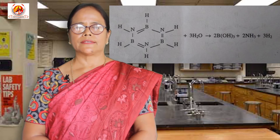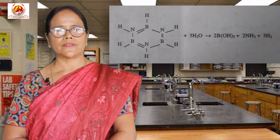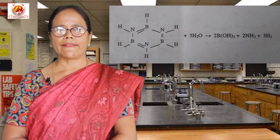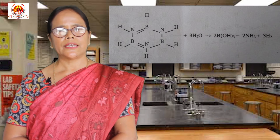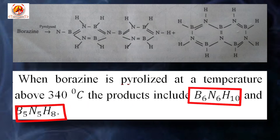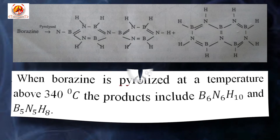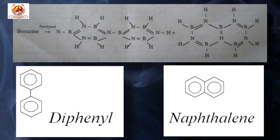Third property: borazine undergoes very slow hydrolysis with water to give hydrogen, boric acid and ammonia, which is favoured with increasing temperature. Fourth property: when borazine is pyrolyzed at a temperature above 340 degree centigrade, the products include B6N6H10 and B5N5H8. These are the boron-nitrogen analogues of diphenyl and naphthalene respectively, as in the given figure.